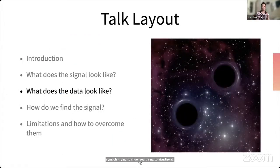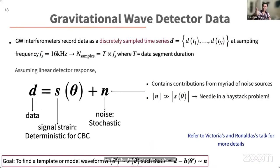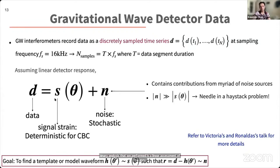Now that we have a basic understanding of the signal, let's look at the data. Our gravitational wave detector data is digital — each second of data contains 16,384 samples. The publicly available data contains sampling at both 16 kHz and 4 kHz. The fundamental assumption behind almost all compact binary analysis is a linear model: the detected data consists of two additive components — the signal strain s and the noise n.